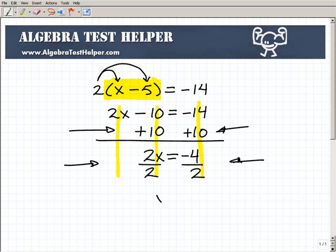So this leaves me with x equals, what's negative 4 divided by 2? Hopefully, you said negative 2. So if you didn't get that right, if you don't know what that is, then obviously you want to go back and work on your positive and negative numbers.